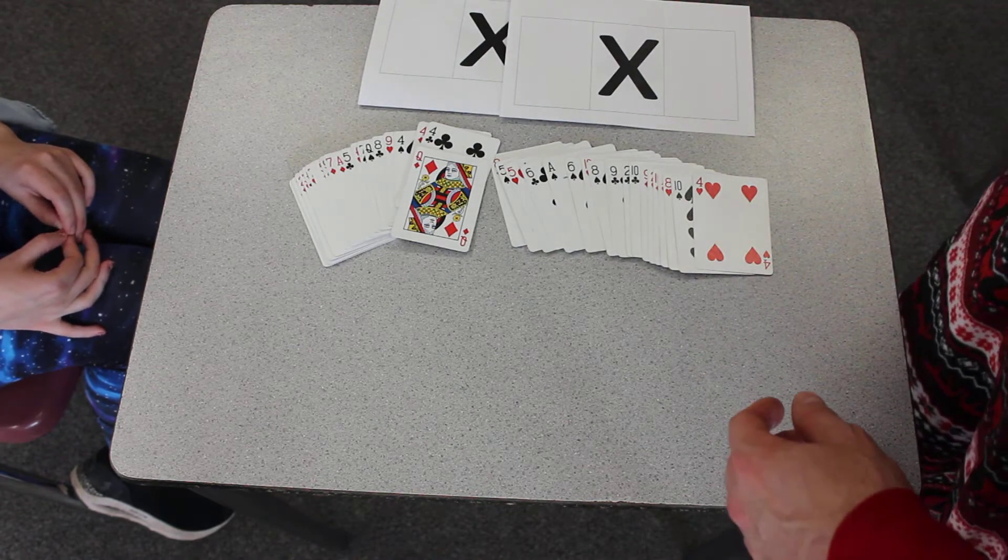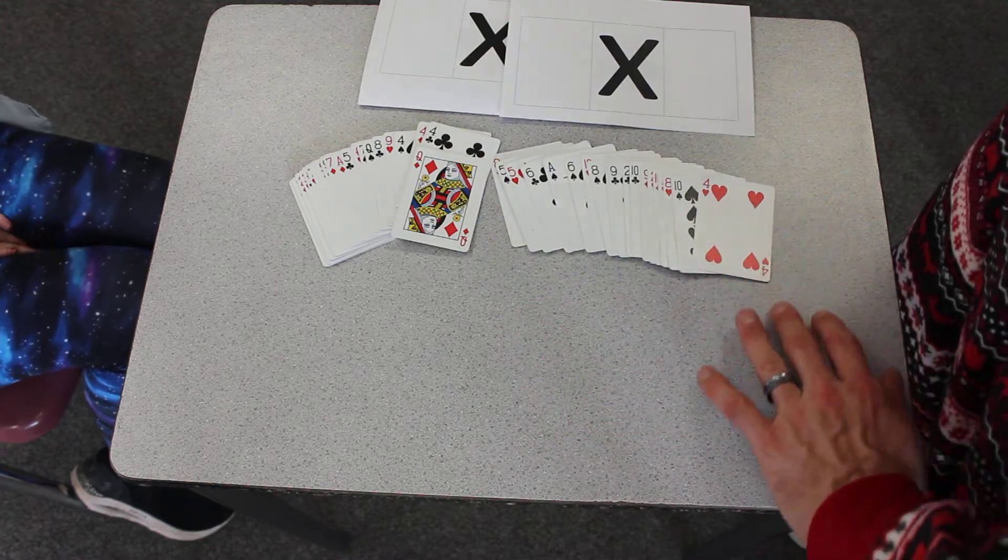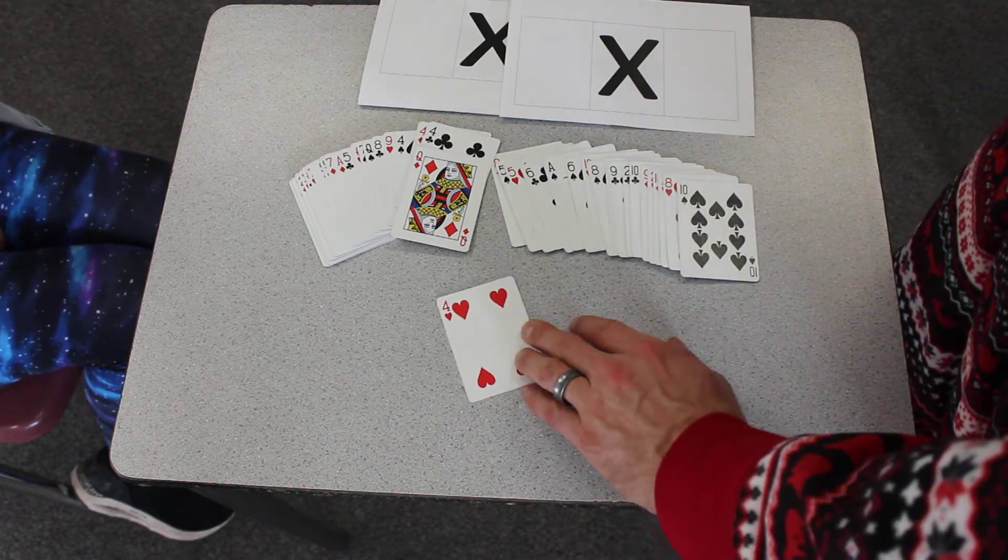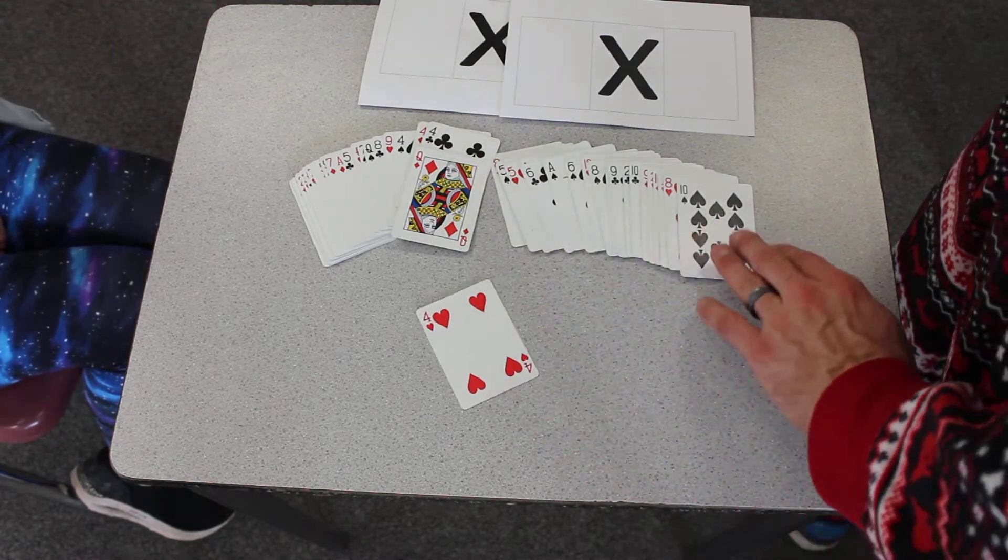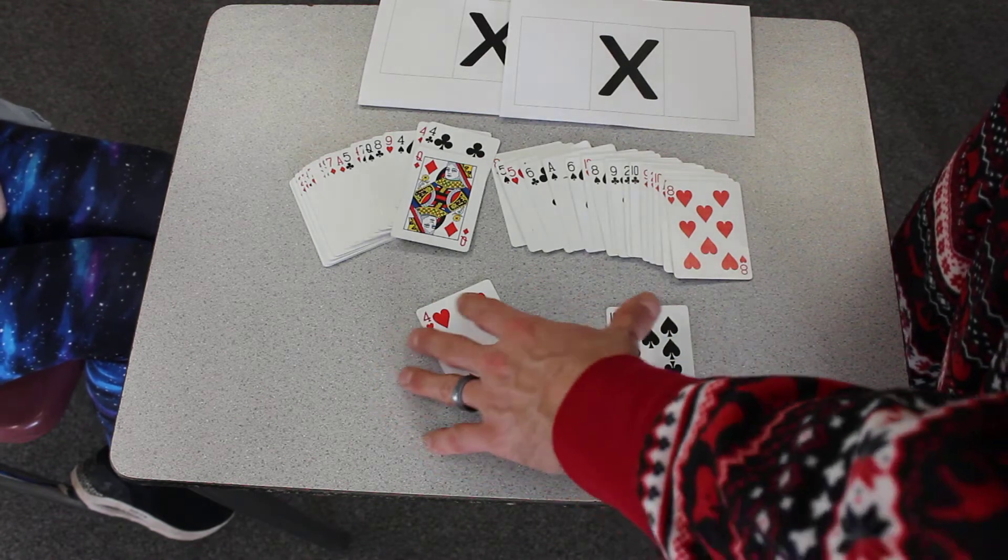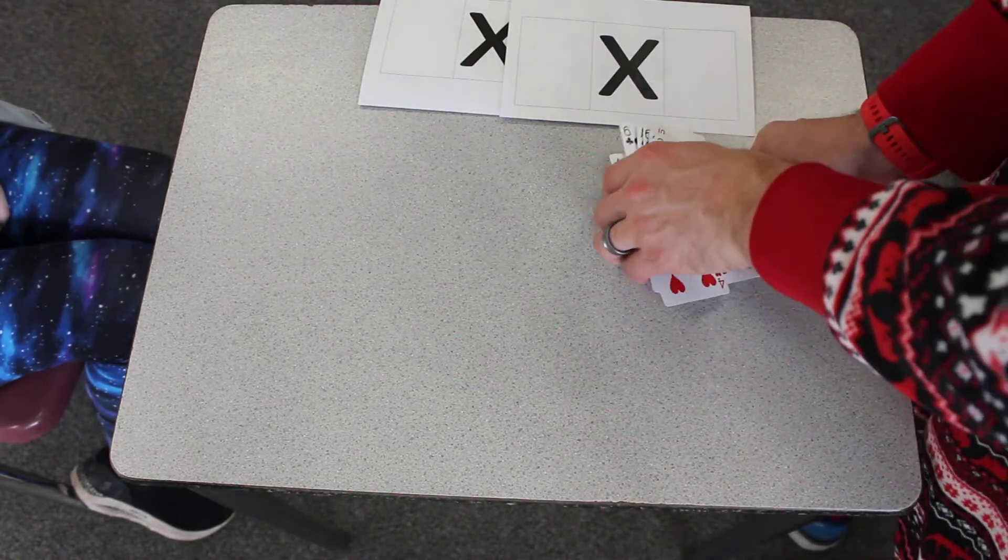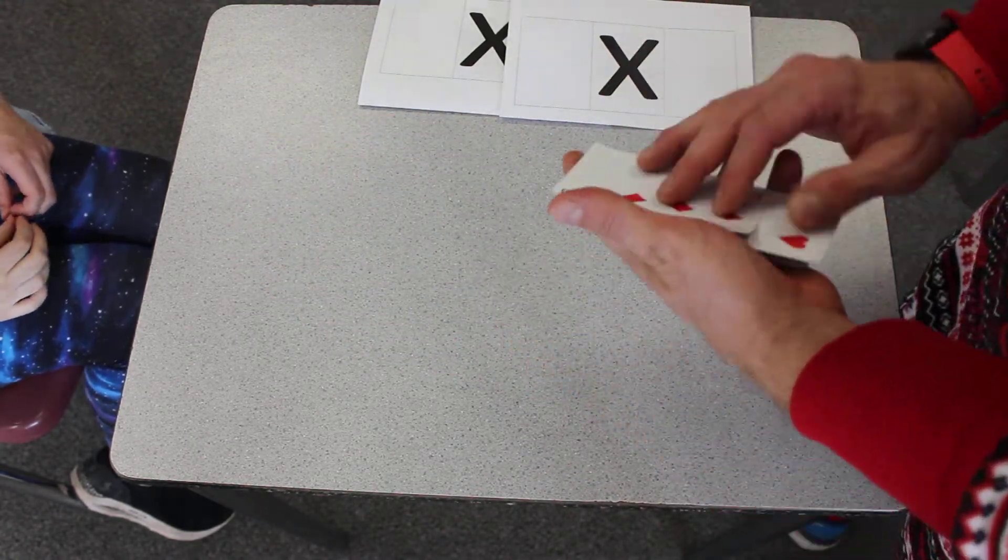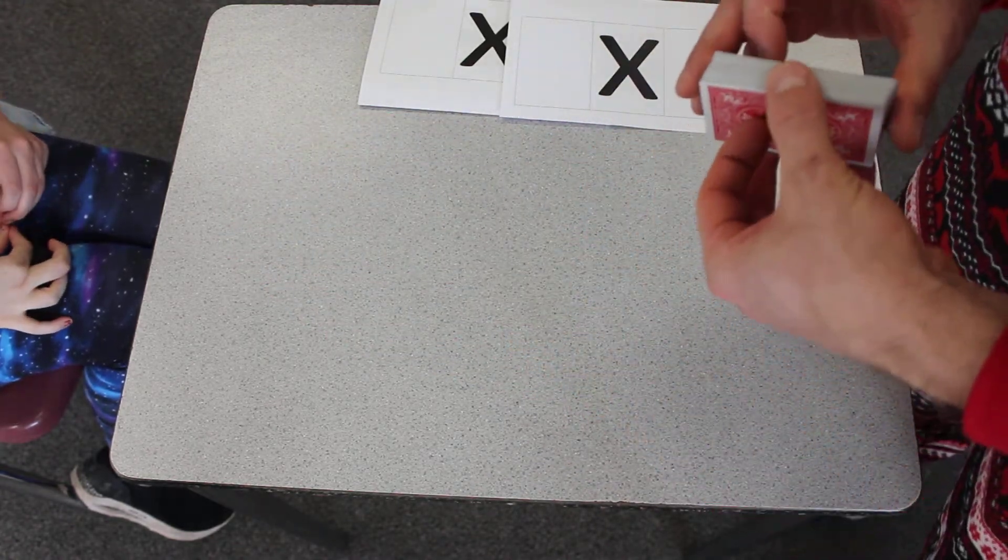This game will be for integers, so all positive and negative whole numbers. The red cards for our example here will be positive and the black cards will be negative. You can switch that up if you would prefer. Divide the cards equally amongst the number of players.